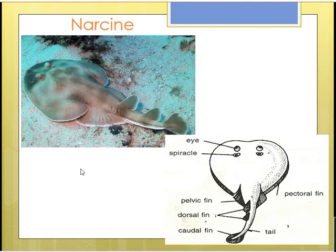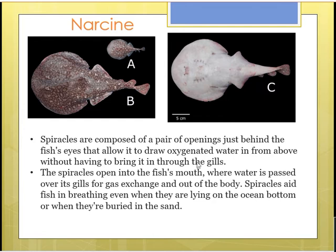So the dorsal side of the head is characterized by the presence of eyes as well as spiracles. The ventral side is characterized by the presence of nostrils, mouth, and gill slits.